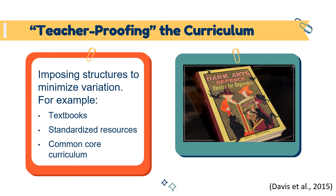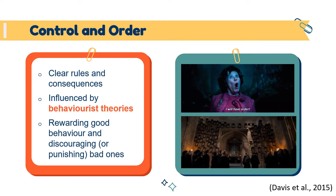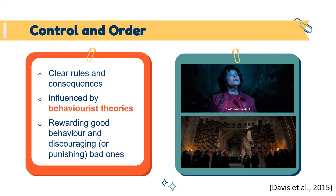There's often a standardized lesson plan that dictates what will be taught, as well as how and when. You may see examples of trying to teacher-proof the curriculum by imposing structures to minimize variation between classrooms, schools, and school districts — for example, using the same textbook or standardized resources as a common core curriculum. Control and order are very important here. Classroom management often includes clear rules and clear consequences for breaking them, influenced by behaviorist theories with a focus on rewarding good behaviors and discouraging or punishing the bad ones.